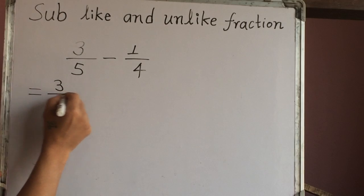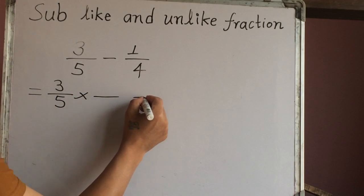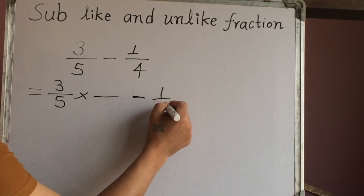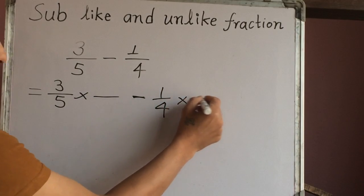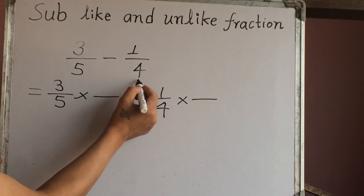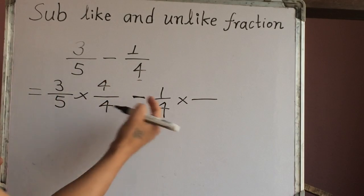First fraction is 3 out of 5 times one fraction here, and this is a subtraction sign. Again write the second fraction, multiply with the number. So we have to multiply the first fraction by the second denominator, that is 4.